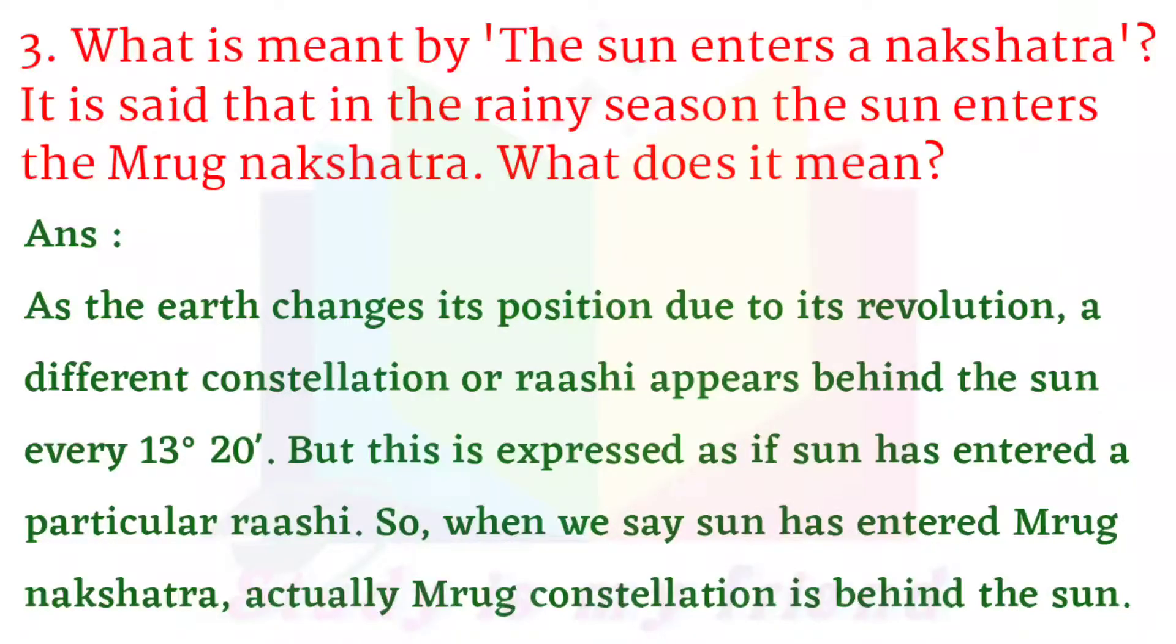As the earth changes its position due to its revolution, a different constellation or rashi appears behind the sun every 30 degrees 20 minutes. But this is expressed as if sun has entered a particular rashi. So when we say sun has entered mriga nakshatra, actually, mriga constellation is behind the sun.